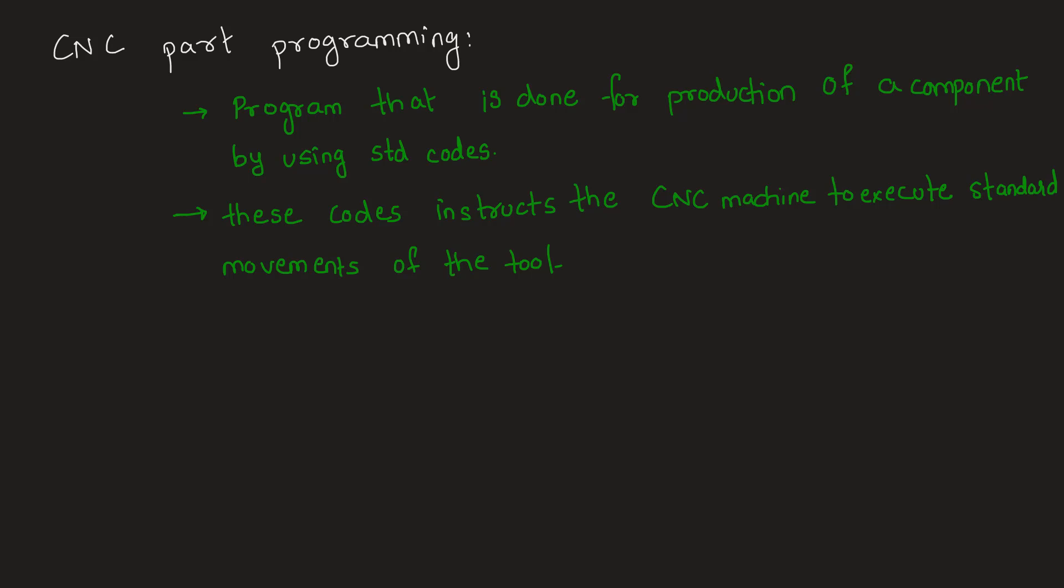The codes consist of alphanumerical characters that signify particular actions, with alphabets like G, M, N, etc., which may signify apex position, federate, speed of the tool, preparatory commands, or miscellaneous functions.